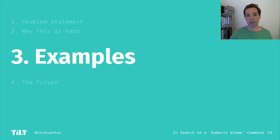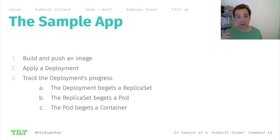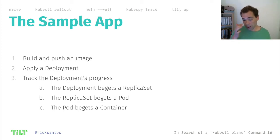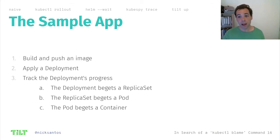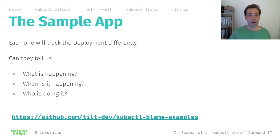Now let's take a look at what exists today in the Kubernetes ecosystem. The sample app we're going to look at is a stripped-down version of Tilt. We build and push an image, apply a deployment, track the deployment's progress, and wait for the first pod to become ready. Quick review of the life cycle of a deployment: a deployment creates a replica set, and the replica set creates a pod. Then the pod is the bit that runs your containers and your code. If you want to follow along, there's a repo at the bottom of your screen where you can run these examples.